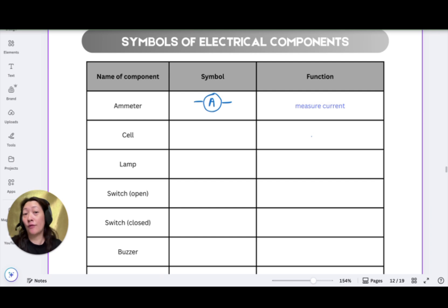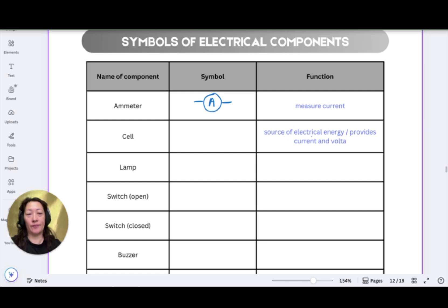Now the cell is the source of the electrical energy in an electrical circuit. So for the cell, you can say that it is the source of electrical energy. Or you can even say that it provides current and voltage. The symbol of a cell is made up of two parallel lines where one is longer than the other, like so. Again, we have the connecting wires on either side of the cell. We'll go through in more detail what these long and short lines mean.